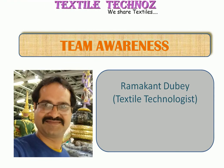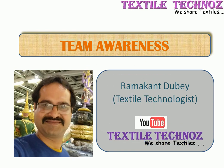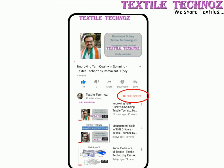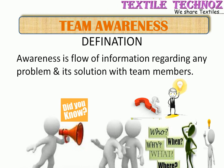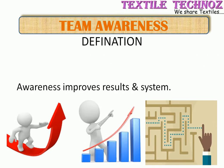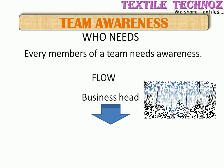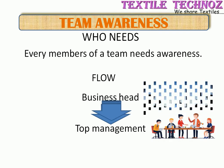Welcome friends, I'm Ramakand Dube and today in this video we will discuss about team awareness. On our YouTube channel Textile Tech Knows, we share textiles content. Awareness is a flow of information regarding any problem along with its solution with the team members. It improves results and systems. Every team member needs to be aware, and the flow comes from top to bottom — from the business head, awareness flows to management and then to the shop floor team.